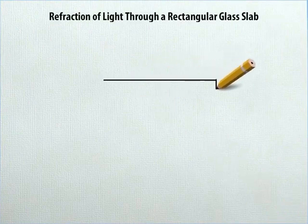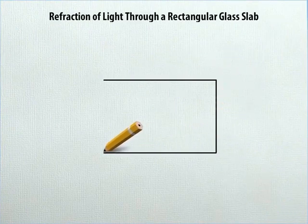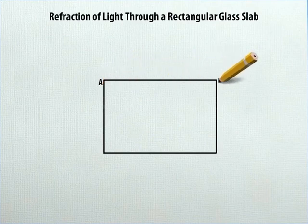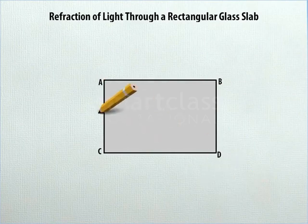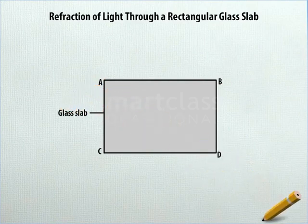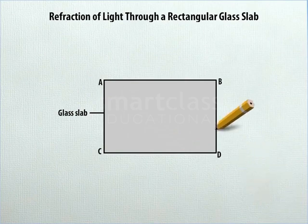In the middle of the sheet, draw a rectangle ABCD. Shade the rectangle and label it as glass slab. Label the lower part of AB near corner B as glass.